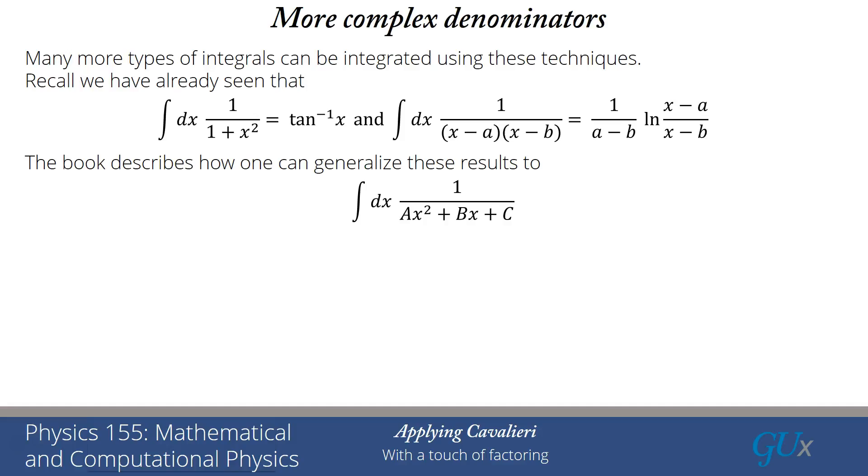The book describes how we can generalize these results to a full quadratic, ax² + bx + c, essentially because we can factorize that. It will result into one of these two kinds of cases. Similarly, you can also integrate all rational functions of the form some polynomial divided by that quadratic raised to some power. That's just, once again, working and iterating the kinds of things that we've already done.